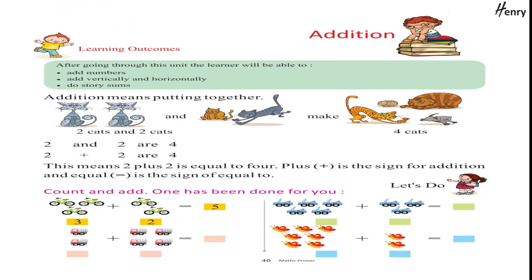Addition. Learning outcomes: after going through this unit, the learner will be able to add numbers, add vertically and horizontally, and do story sums. Addition means putting together — two cats and two cats make four cats. Two and two are four; two plus two are four.